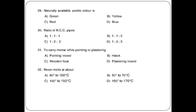RCC pipe ratio: 1:1:2 or 1:2:2 or 1:2:3. To carry mortar while pointing or plastering, the tool used — options: pointing trowel, hawk, wooden float, plastering trowel. The answer is option B: hawk.